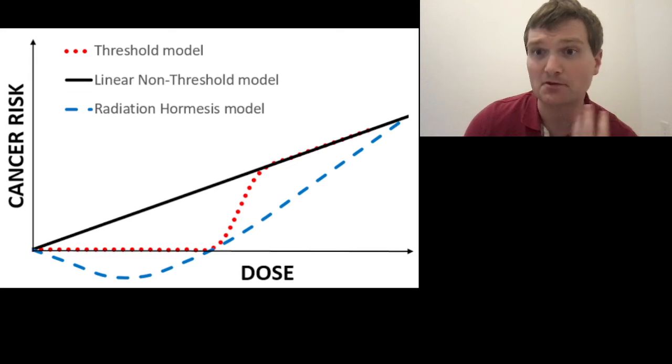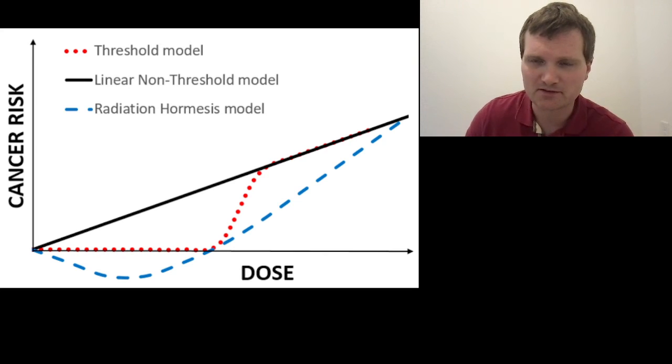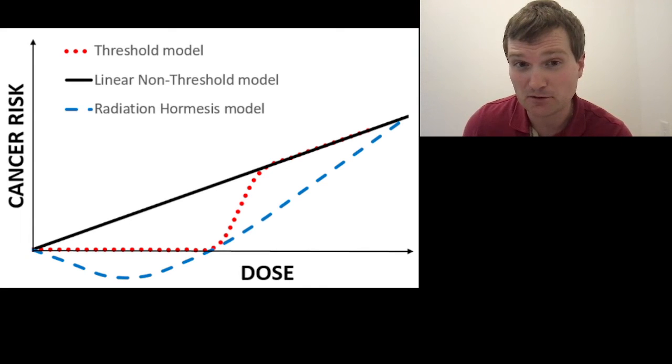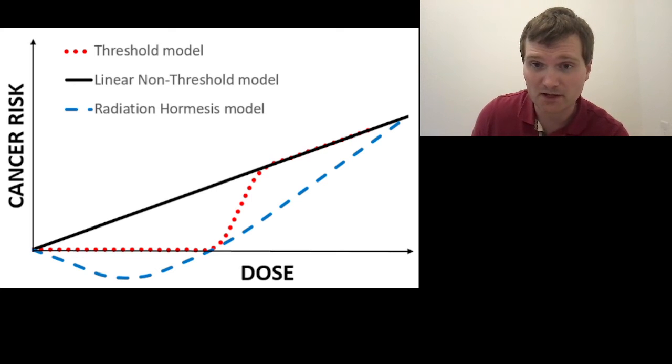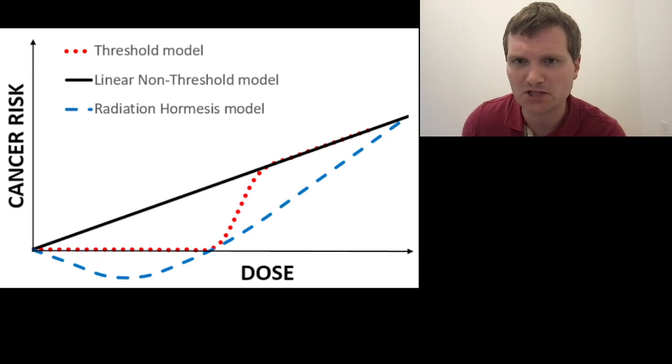So, there are three models. One is the linear non-threshold, just more radiation, more increased risk of cancer. Then there's the threshold model, which radiation has no impact on cancer risk up until a certain point, and then it increases your risk of cancer. The hormesis model says a little bit of radiation is actually good for you when it lowers your cancer risk, but too much, and then it ends up getting a whole lot worse.